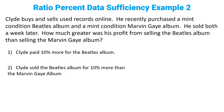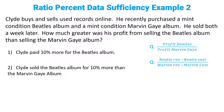Example number two may look very familiar to those of you who have already done example number one, but in the GMAT, the devil's always in the details. Clyde buys and sells used records online. He recently purchased a mint-conditioned Beatles album and a mint-conditioned Marvin Gaye album. He sold both a week later. How much greater was his profit from selling the Beatles album than the Marvin Gaye album? What we've been asked for is the profit of the Beatles over the profit of Marvin Gaye — that's Beatles revenue minus Beatles cost over Marvin Gaye revenue minus Marvin Gaye cost, or BR minus BC over MR minus MC.